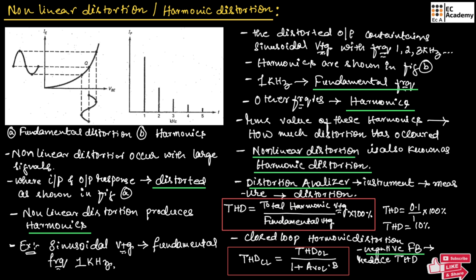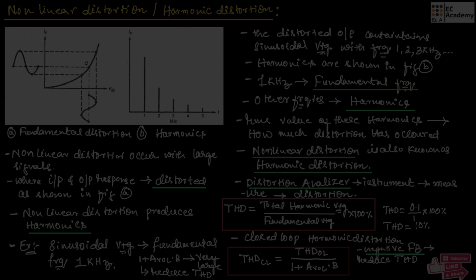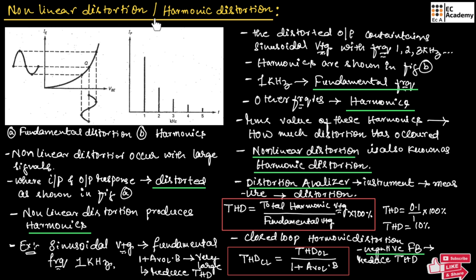Also, if we take (1 + A_VOL × B) as very large, this will further reduce total harmonic distortion. If (1 + A_VOL × B) is very large, the total harmonic distortion will be negligible. This concludes our topic on non-linear distortion or harmonic distortion. Hope you have understood the topic. Thank you.